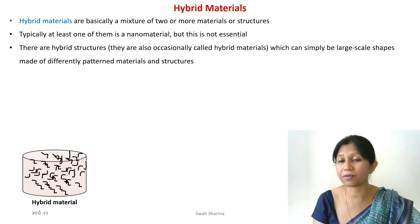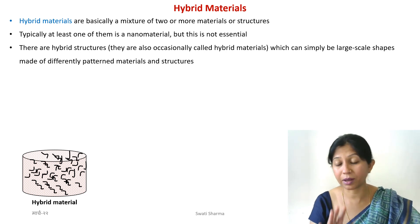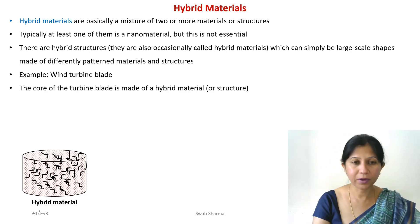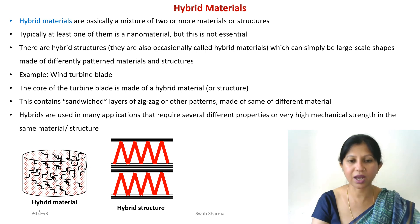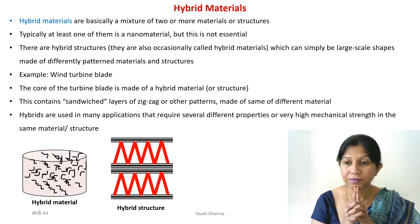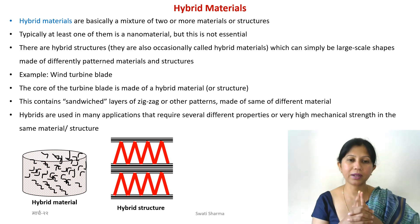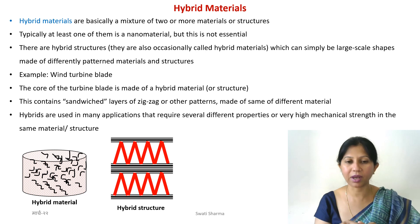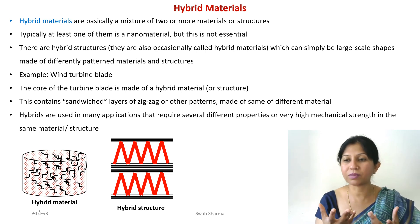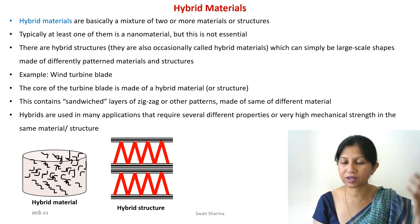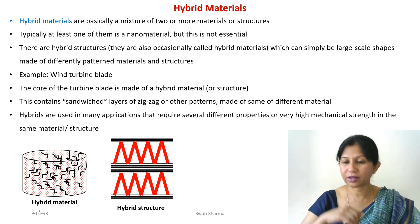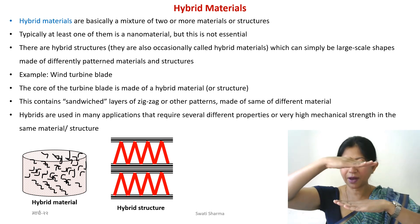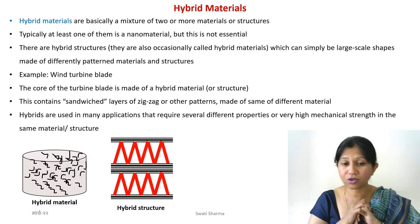Now, what are hybrid structures? Sometimes hybrid structures and hybrid materials are used interchangeably — don't get confused. Hybrid structures can be something like this: the black lines I've drawn represent a cloth or fabric-like structure, similar to what we discussed in the composite lecture. You want to make something with these fabric-like structures and make that structure very strong.